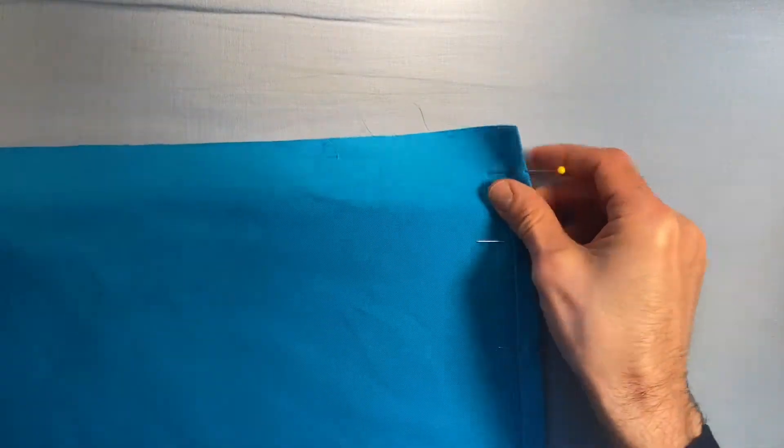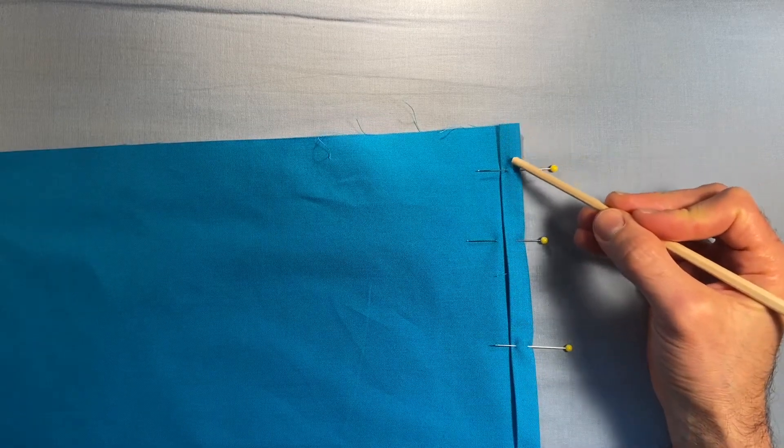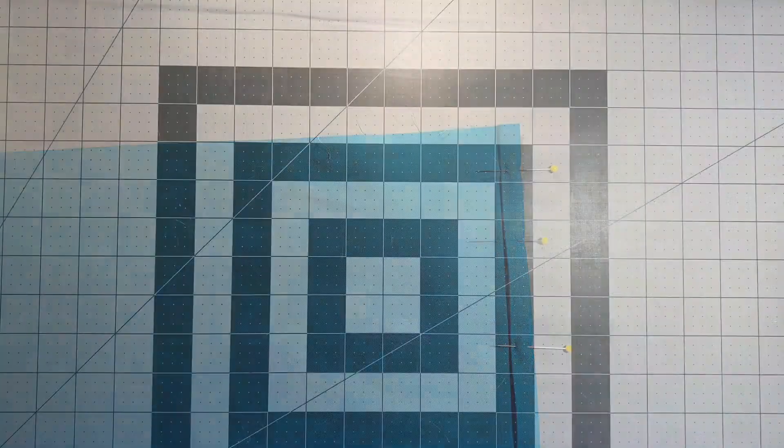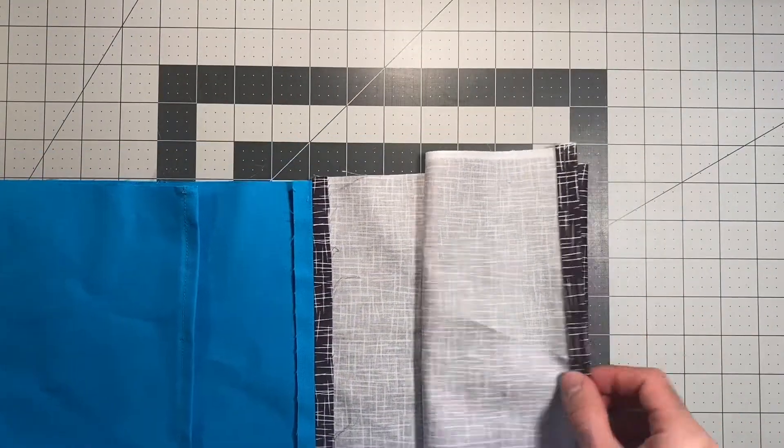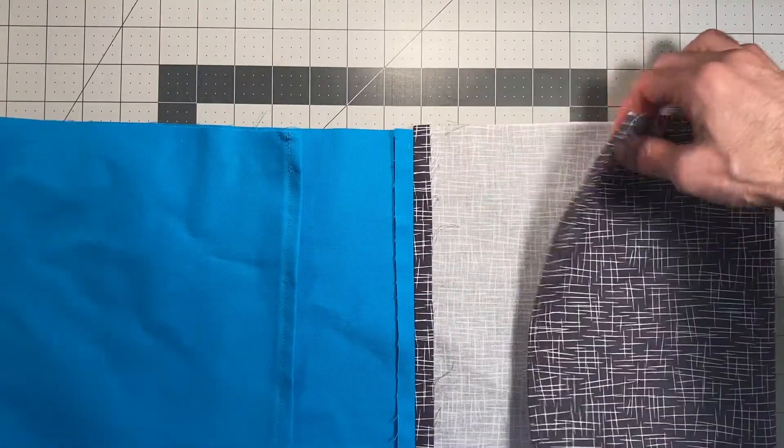Now I'm going to sew these two hems down right in the middle of the two folds. I'm not using a seam allowance here, just trying to aim for the middle. Now that those hems are sewn, all four of the 14 inch edges are taken care of.